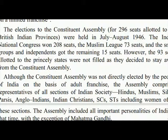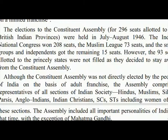However, the 93 seats allotted to the princely states were not filled as they decided to stay away from the Constituent Assembly. Although the Constituent Assembly was not directly elected by the people on the basis of adult franchise, it comprised representatives of all sections of Indian society — Hindus, Muslims, Sikhs, Parsis, Anglo-Indians, Indian Christians, SCs, STs — including women of all these sections. The assembly included all important personalities of India at that time, with the exception of Mahatma Gandhi.